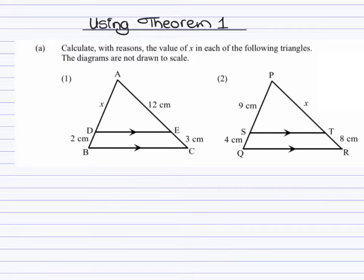The first question that we're working with, we need to calculate with reasons the value of x in each of the following triangles. For these types of questions, I will need to compare one side of the triangle, so for example AD over DB, I will be comparing it to the sides AE divided by EC. That would be the same for the other triangle as well. What you could do as well is to compare AD to the entire side DB and comparing that to the entire side EC.